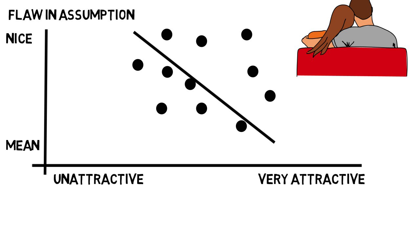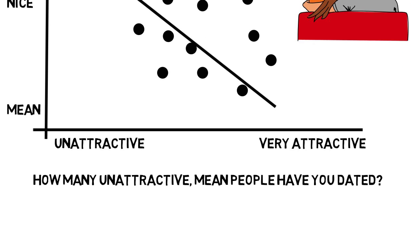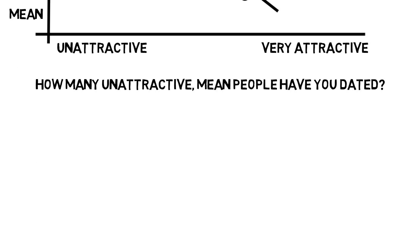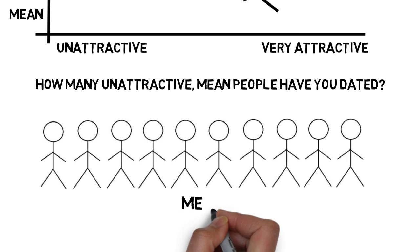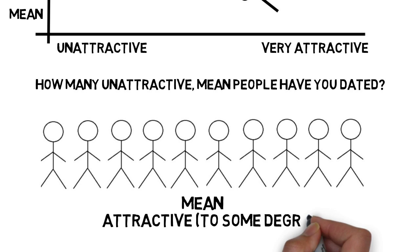But this issue can be found with just one question: how many unattractive mean people have you dated? It's probably none — an unattractive mean person would not even be on your radar. In fact, if we lined up all the people you dated who were mean, we'd know that all of them, or at least most, would be attractive to some degree, because unattractive mean people are not on your radar.